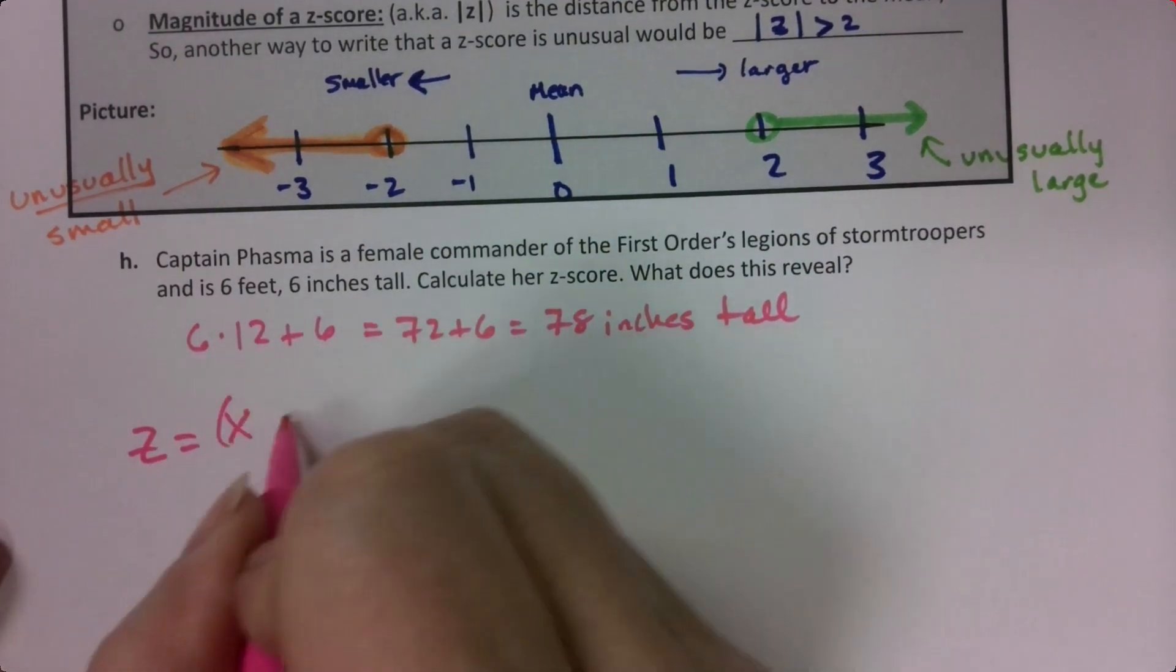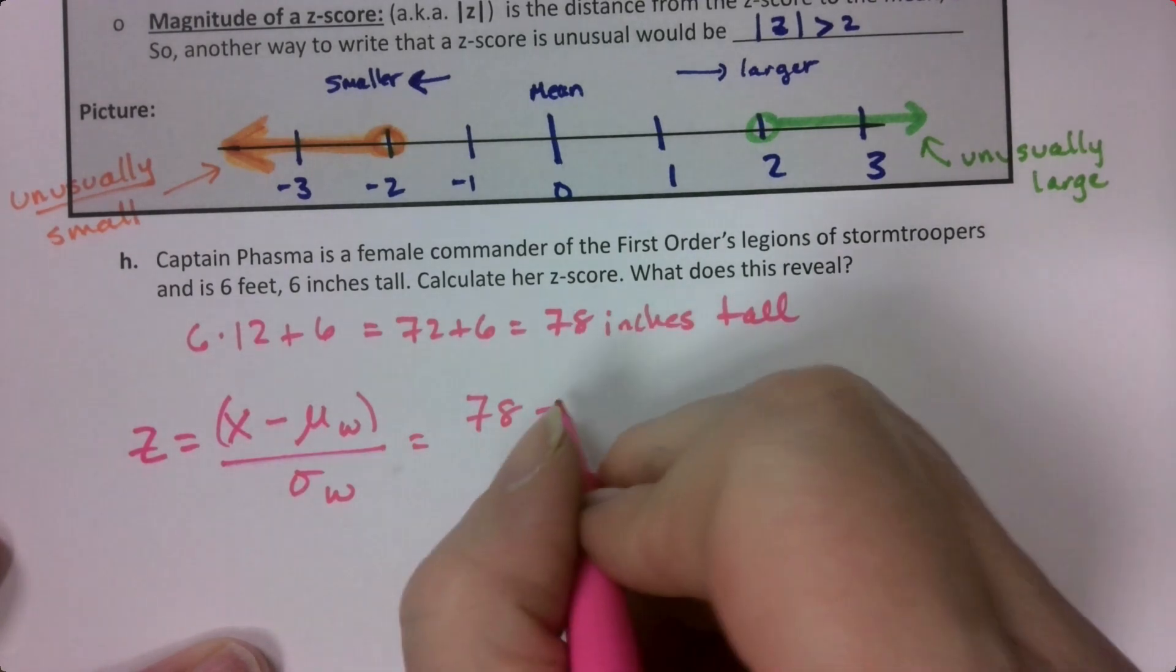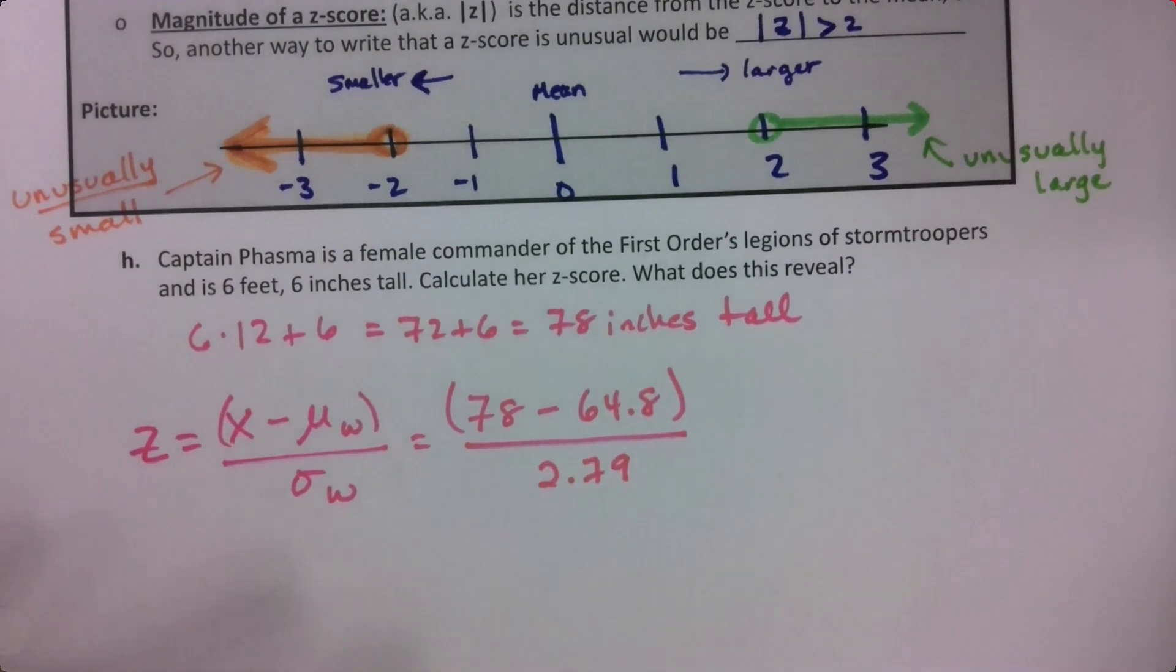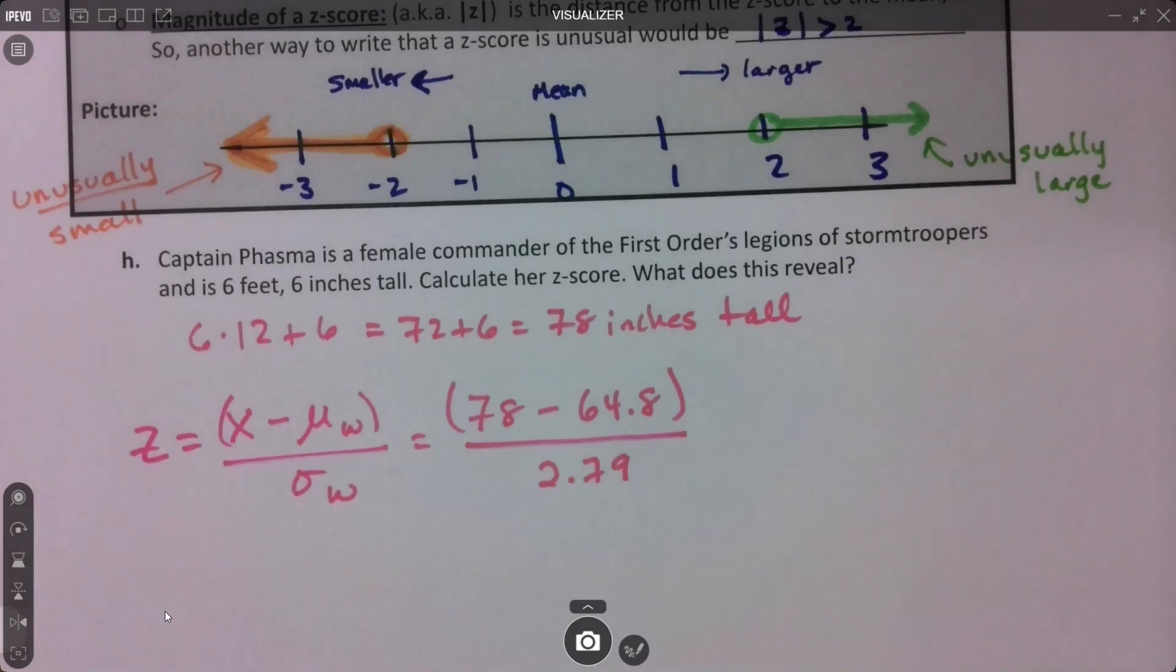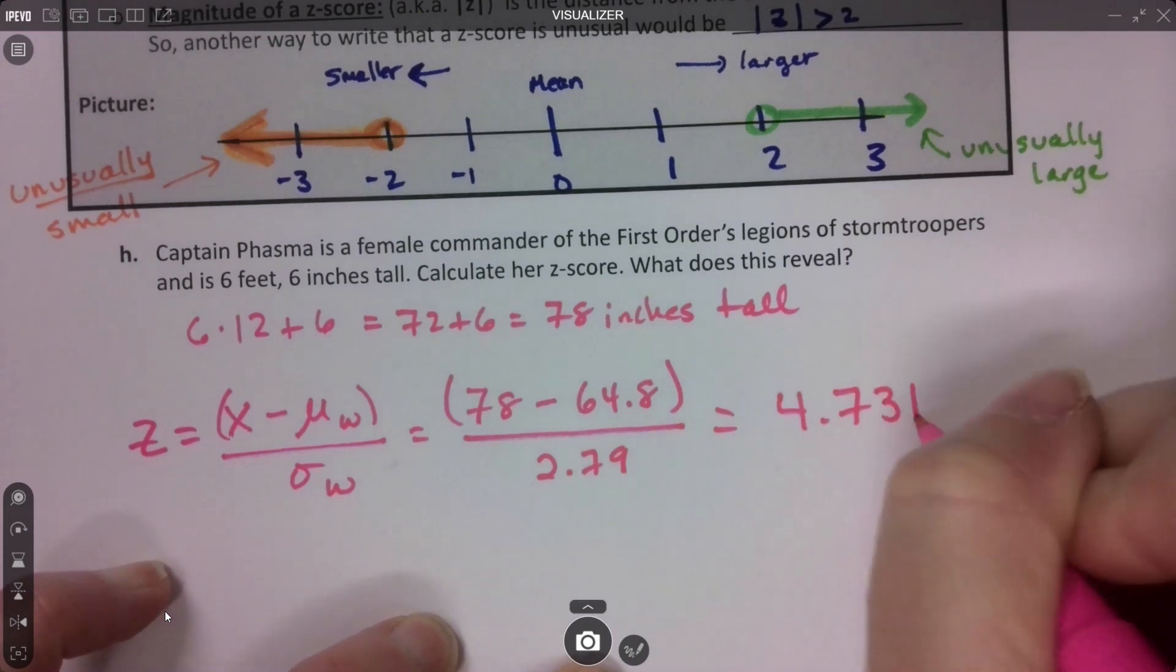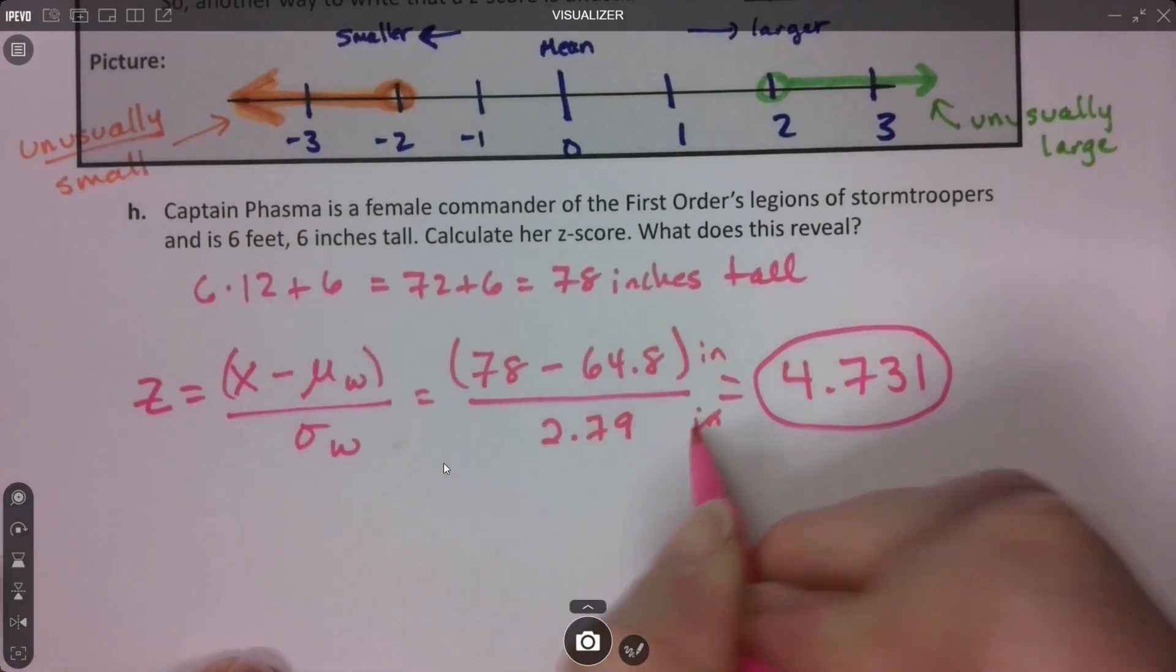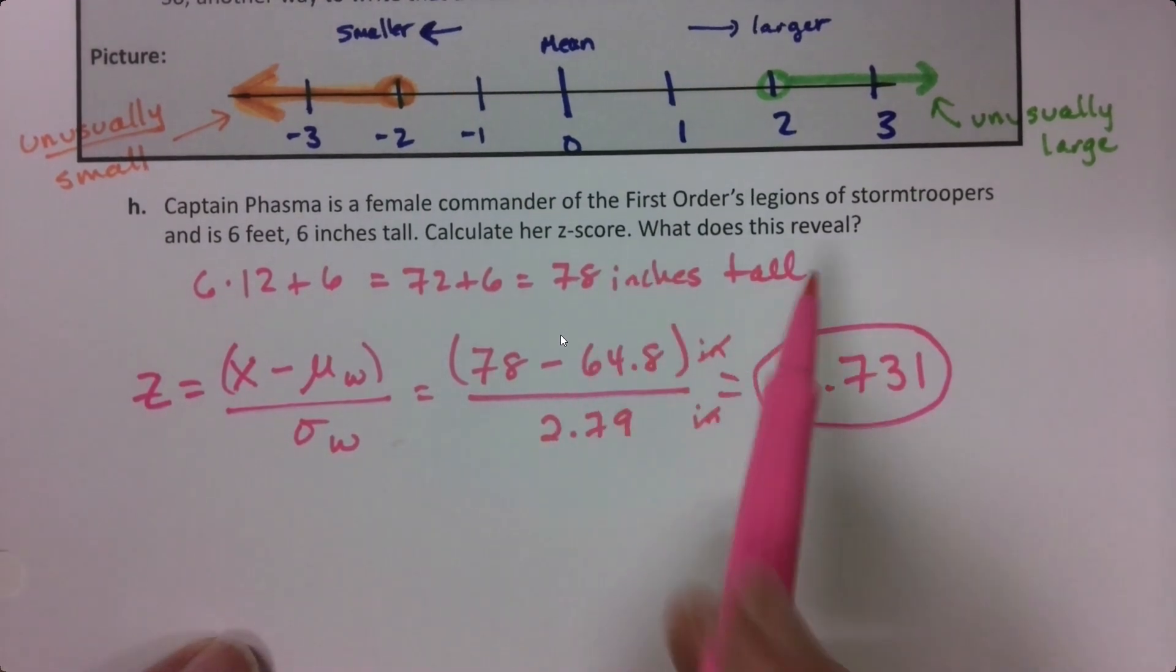Let's find her z-score. It would be her value minus the mean for women over the standard deviation. So 78 takeaway 64.8 divided by 2.79. Let me go back into Desmos. I can see it's 4.731. Remember, there are no units. It's not inches or anything. Because inches and inches cancel, so there's no unit to a z-score.